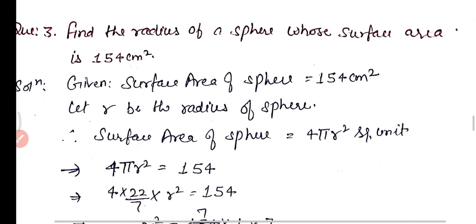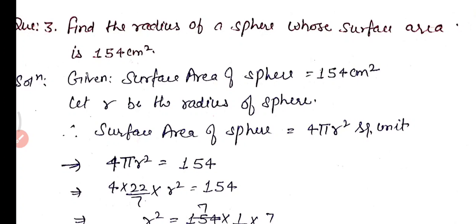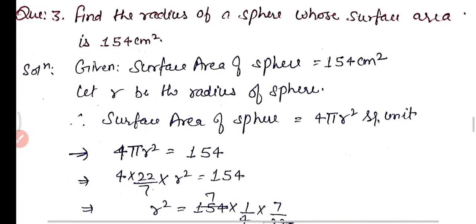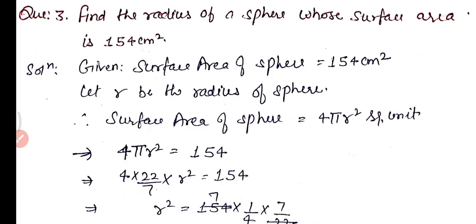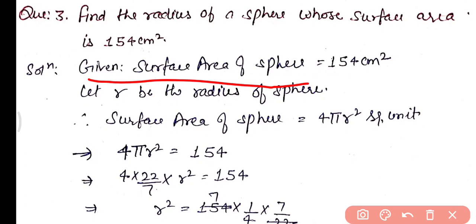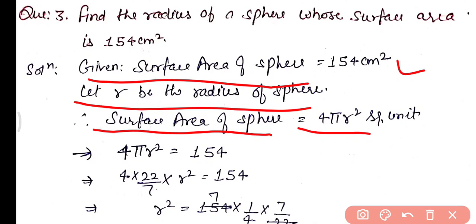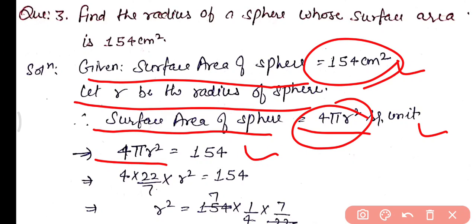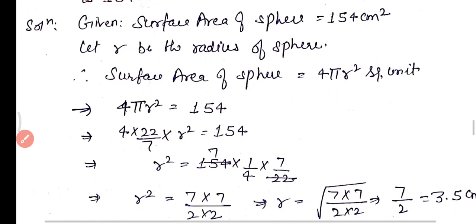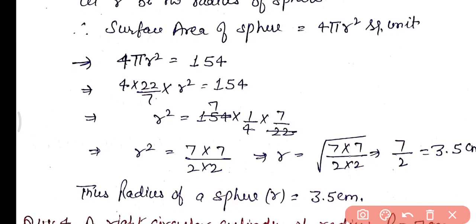Question number 3: find the radius of a sphere whose surface area is 154 centimeter square. Let the radius be r. Surface area = 4πr² = 154. So 4 × (22/7) × r² = 154, giving r² = 154 × (1/4) × (7/22) = 49/4. Therefore r = 7/2 = 3.5 centimeter. The radius of the sphere is 3.5 centimeter.